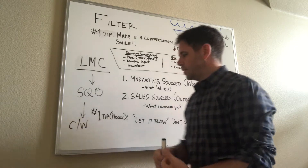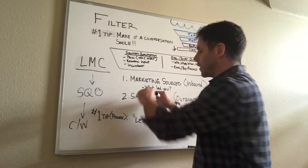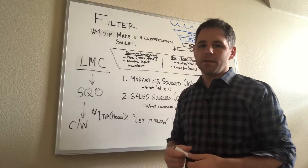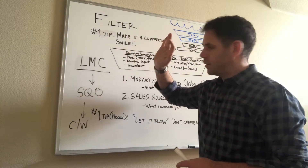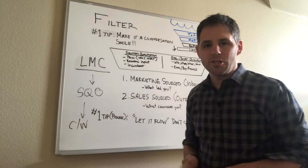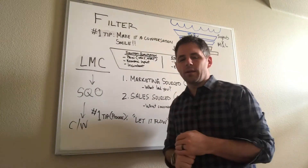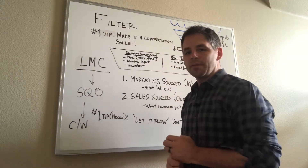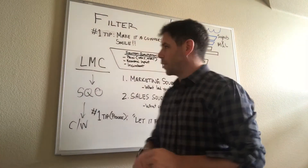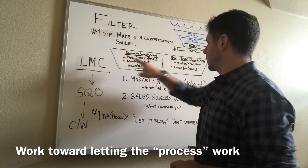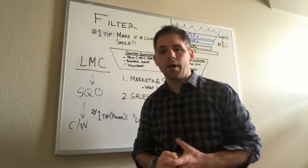When you let the manager or some middle manager be the gate, it just creates unnecessary conflict. Just agree upon the process. If the box is checked, then the box is checked, and the AE is accountable from that point forward. Don't create an approval gate of any sort other than the qualification criteria you're setting forth here in the filter stage, in the lead maturation criteria.